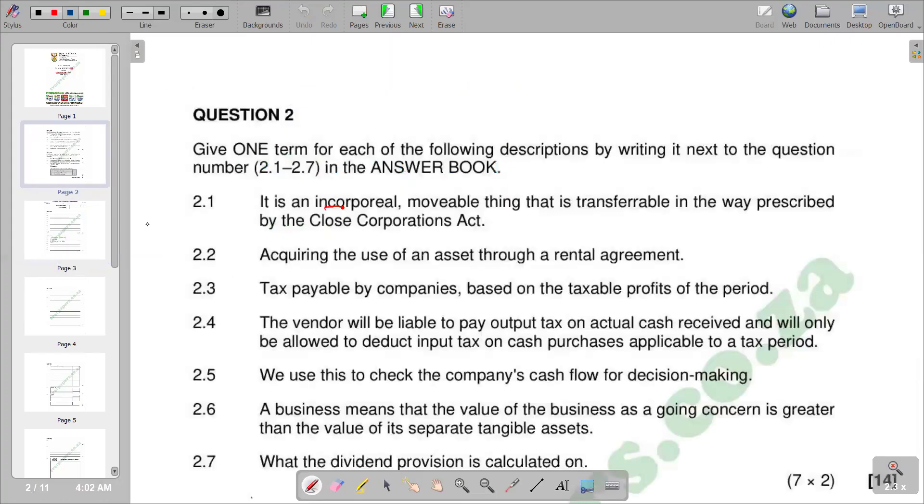Let's go to 2.4. The vendor will be liable to pay output tax on actual cash receipts and will only be allowed to deduct input tax on cash purchases applicable to a tax period. The most appropriate answer is payment basis. 2.4 we have payment basis.